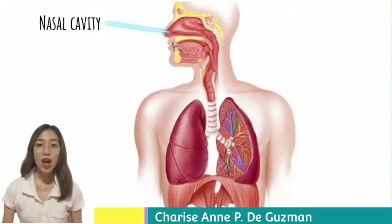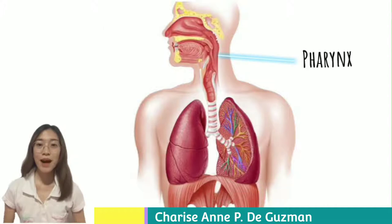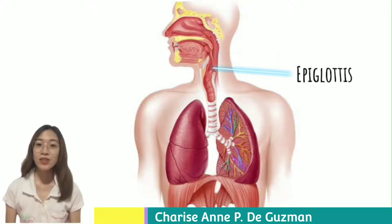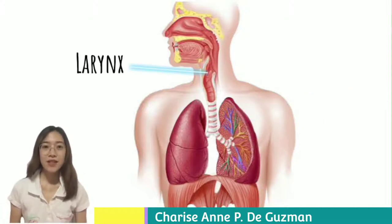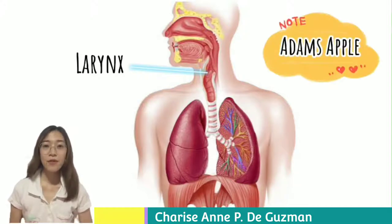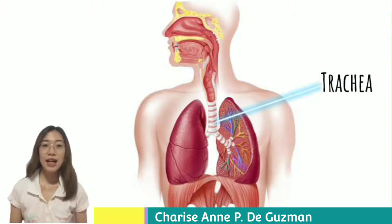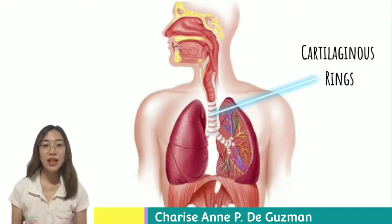The nasal cavity opens into a wider cavity called the pharynx, which is the common passage for air and food. The pharynx has cartilage called the epiglottis, which closes the windpipe when we swallow food. Following the pharynx, there is the larynx, also known as the Adam's apple in boys. From here, air passes through a 4-inch long tube-like structure called the trachea, often referred to as the windpipe.